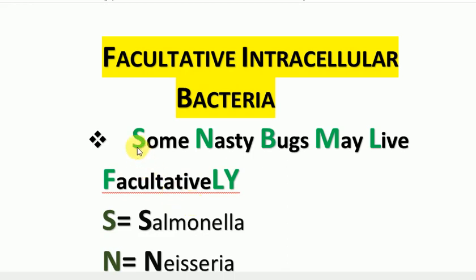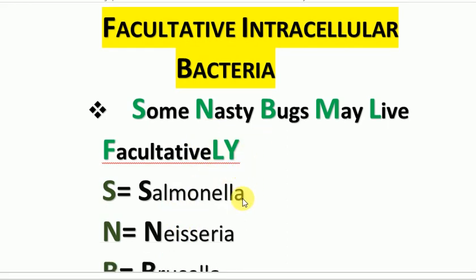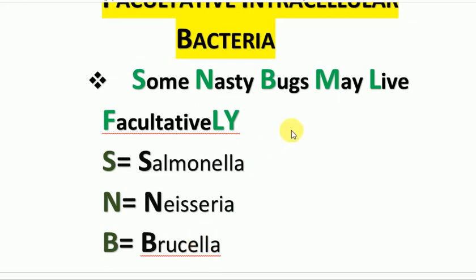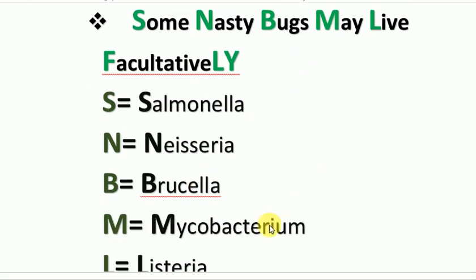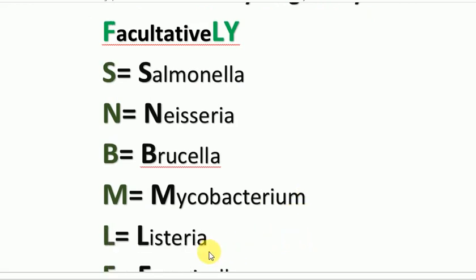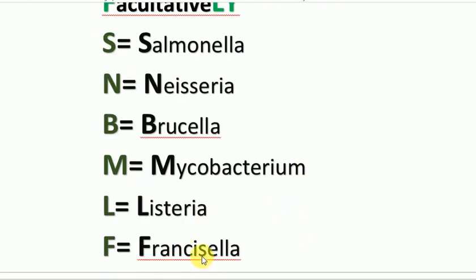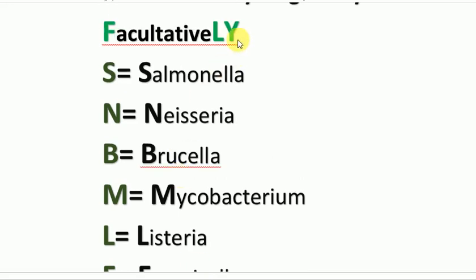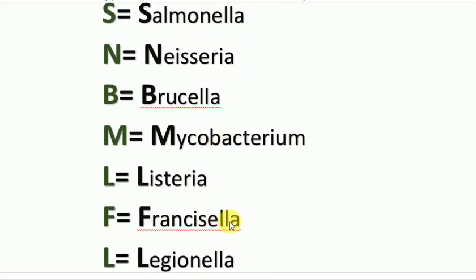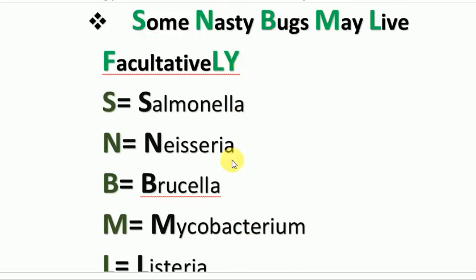The capital letters in the mnemonic denote the names of the bacteria: S for Salmonella, N for Nocardia, B for Brucella, M for Mycobacterium, L for Listeria, F for Francisella, L for Legionella, and Y for Yersinia.